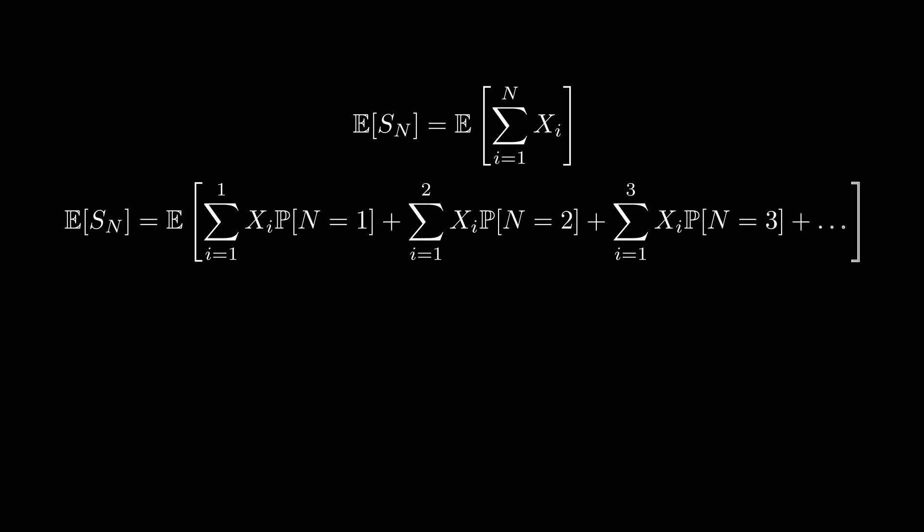To compute the expected value of S big N, let's break it down step by step. The expected value of S big N can be written as the expectation of the sum of the first big N random variables. Expanding this further, we use the law of total expectation. Here, it becomes the sum of contributions from each possible big N.